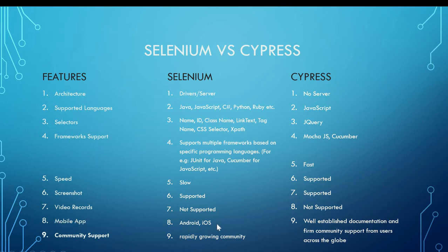Number eight: Mobile app support. Selenium supports Android and iOS automation, as we all know. Cypress still doesn't have any mechanism for mobile automation, but I think it will come pretty soon.